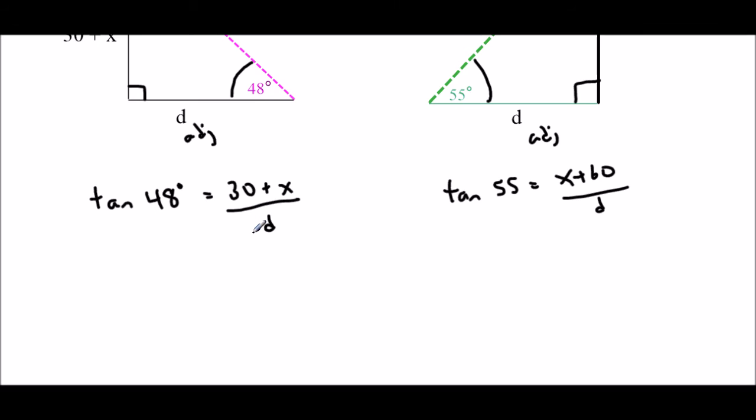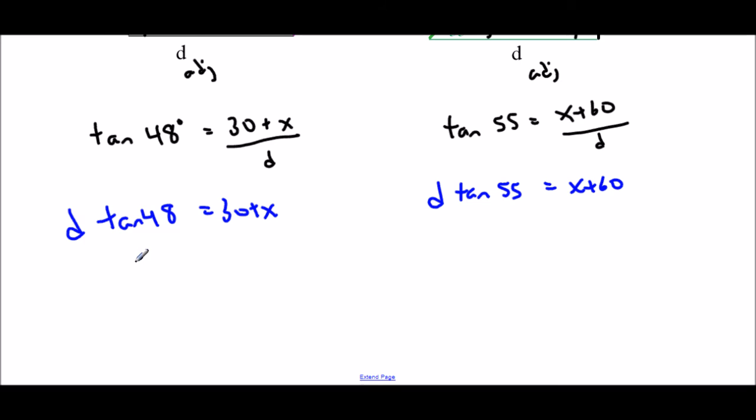So what I end up having is two equations with two unknowns. So now we're going to, in the middle of a trig question, do some linear system solving. So I want to rearrange so that I can set these equal to each other. So I'm going to multiply by d. So here, if I multiply by d, I get tan 48 times d equals 30 plus x. And over here, if I multiply by d, I get tan 55 times d equals x plus 60. And that means on both equations, I can now isolate d by dividing by that tan expression. So here, d equals 30 plus x divided by tan 48. And here, d equals x plus 60 divided by tan 55.